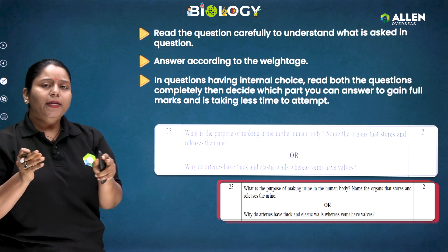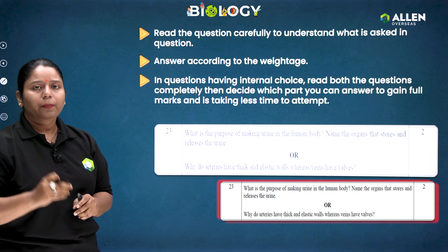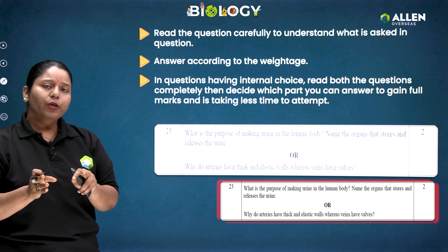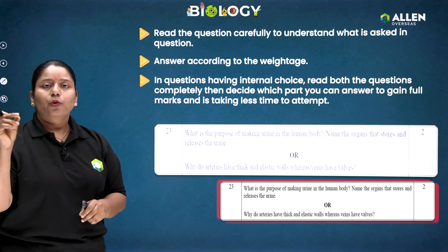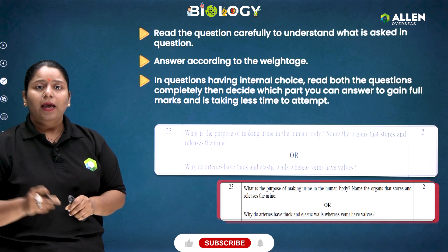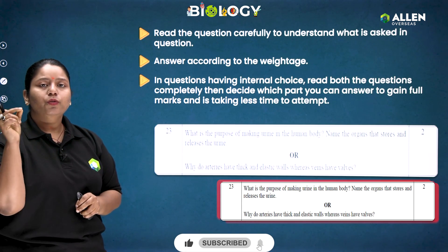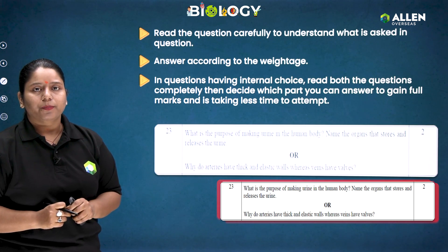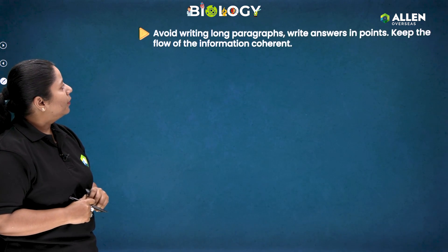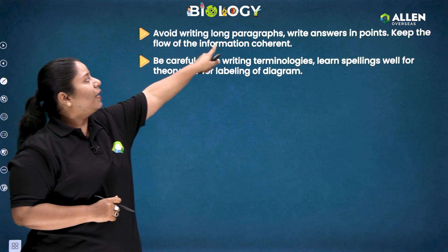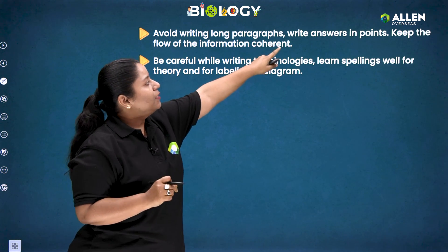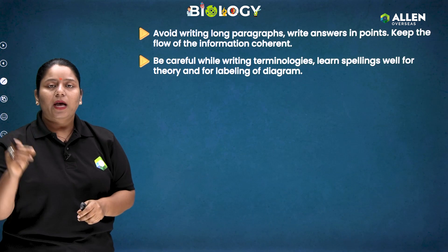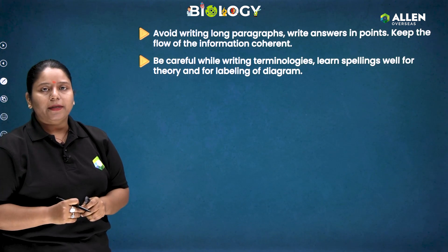For example, in a sample paper shared by CBSE, question number 23 has an optional question. You have to read both optional questions and decide wisely which is suitable for you to gain full marks in less time. Avoid writing long paragraphs; write answers in points and keep the flow of information coherent.